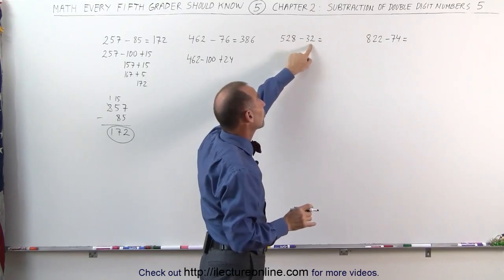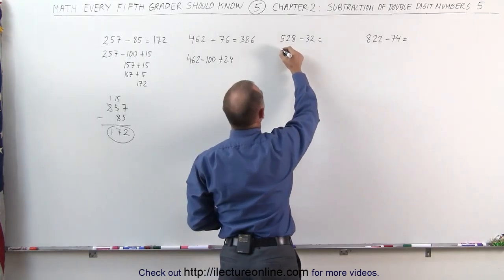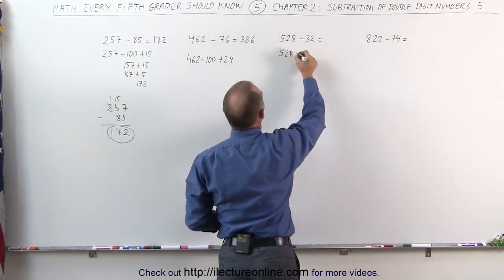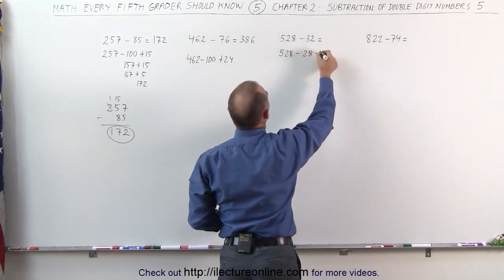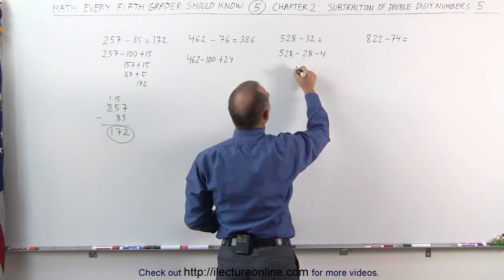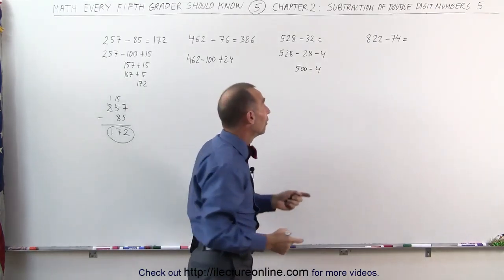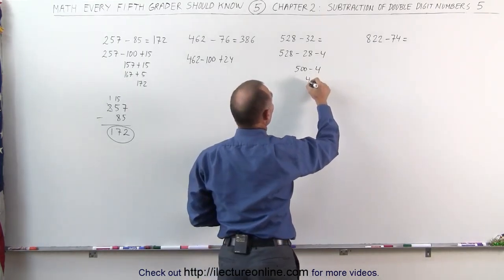So what I can do is I can subtract 28, and then I can subtract 4 more. I can think of it as follows: 528 minus 28 and minus 4. Because 528 minus 28 gives me 500, and then I subtract 4 from that, and that's easy to do.